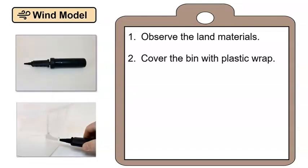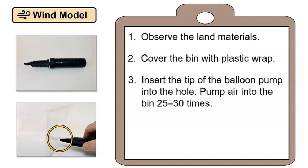Next, we can use our balloon pump to make wind. But remember, we have plastic wrap covering the bin. So how will we pump air into the bin? I think we will need to drill a hole in the side of the bin. Then, we can insert the tip of the balloon pump into the hole. Then, we will pump air into the bin 25 to 30 times to create a burst of moving air that represents wind. Let's add this step to our procedure sheet.